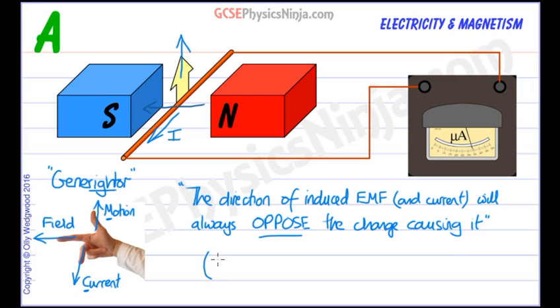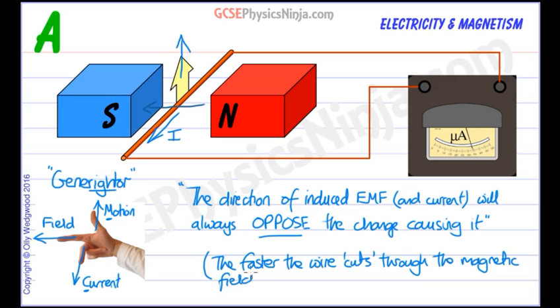So just a side note down here. The faster the wire or conductor cuts through the magnetic field, the greater the induced EMF and current if there is a circuit.